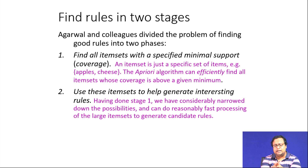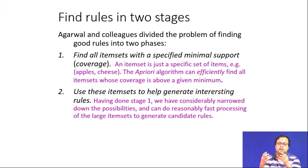For example, let us say 1 percent — that means combinations occurring less than 1 percent of the dataset will not be considered at all. These items are then used to help generate rules; you do not create a rule arbitrarily. Having done stage 1, we have considerably narrowed down the possibilities, and you can do reasonably fast processing on large item sets to generate candidate rules.